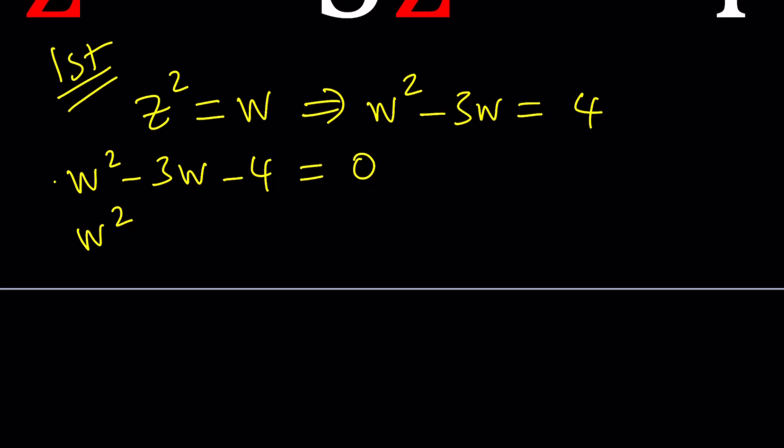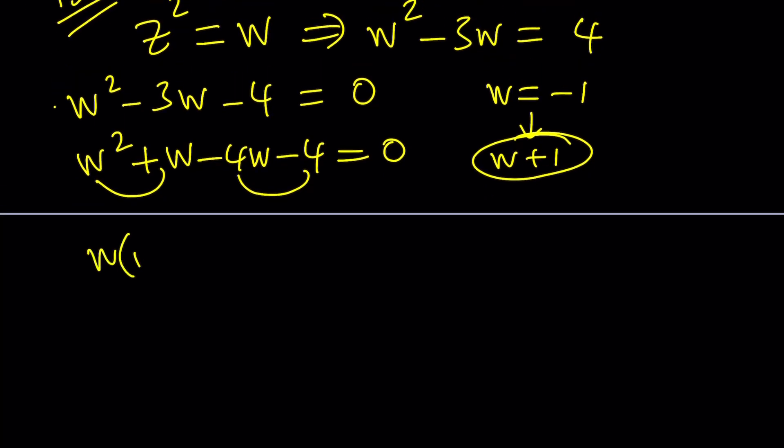So here's what we're going to do. We're going to make this divisible by w plus 1, because if w equals negative 1 is a solution then w plus 1 needs to be a factor. That's what the factor theorem says. So we're going to write it as w squared plus w, because that is divisible by w plus 1, and then minus 4w to get negative 3w, and then follow up with negative 4. This is actually with quadratics a pretty easy method, and then you can factor w out and then negative 4 out and now you'll have a common factor.